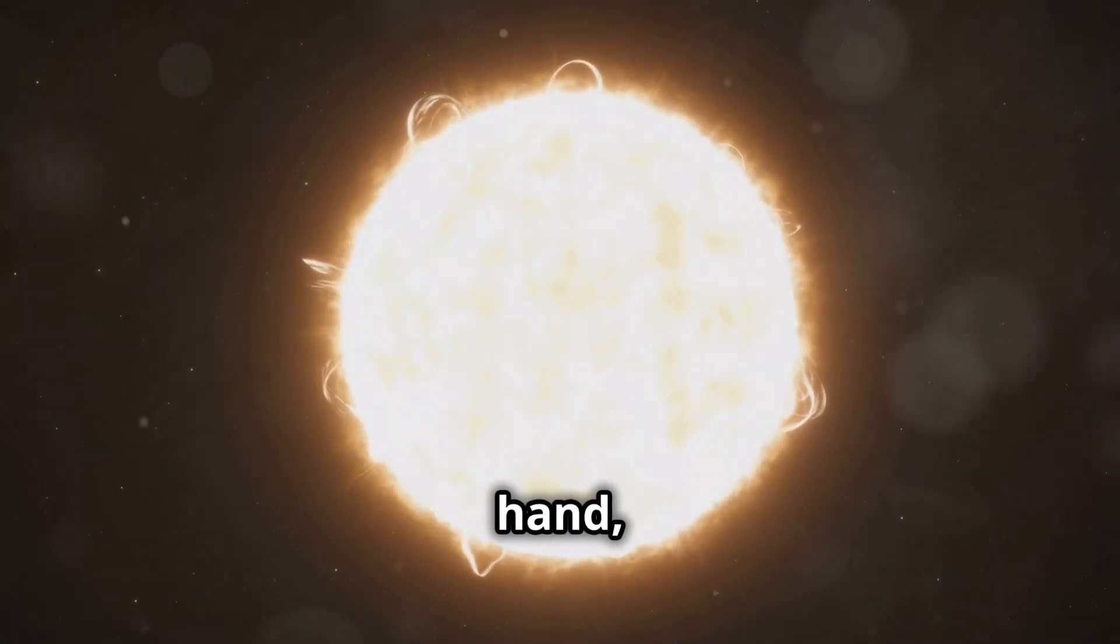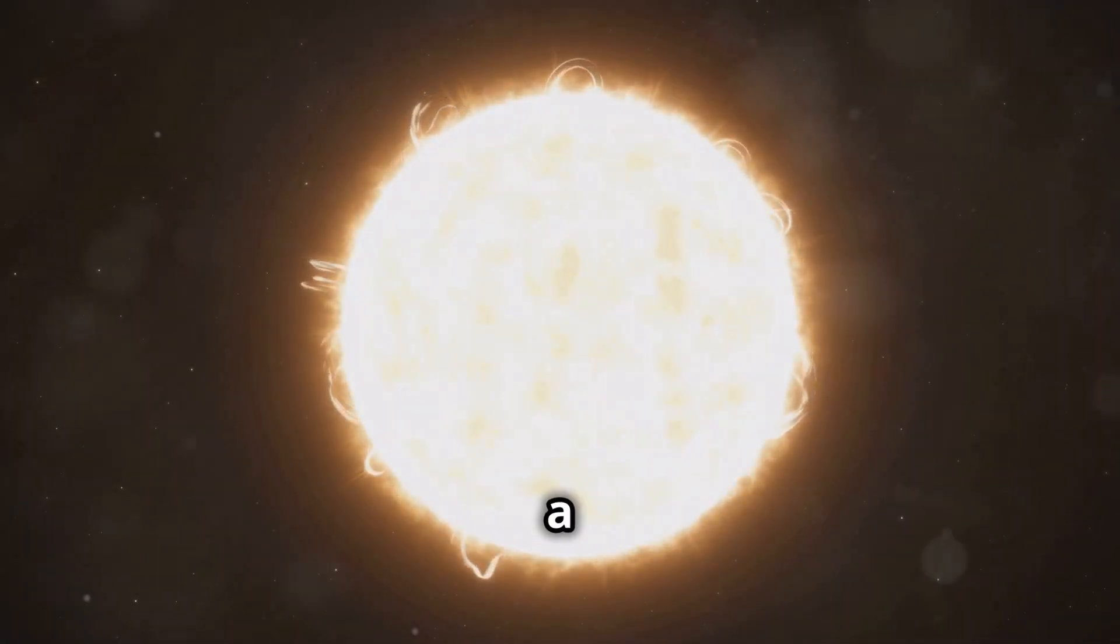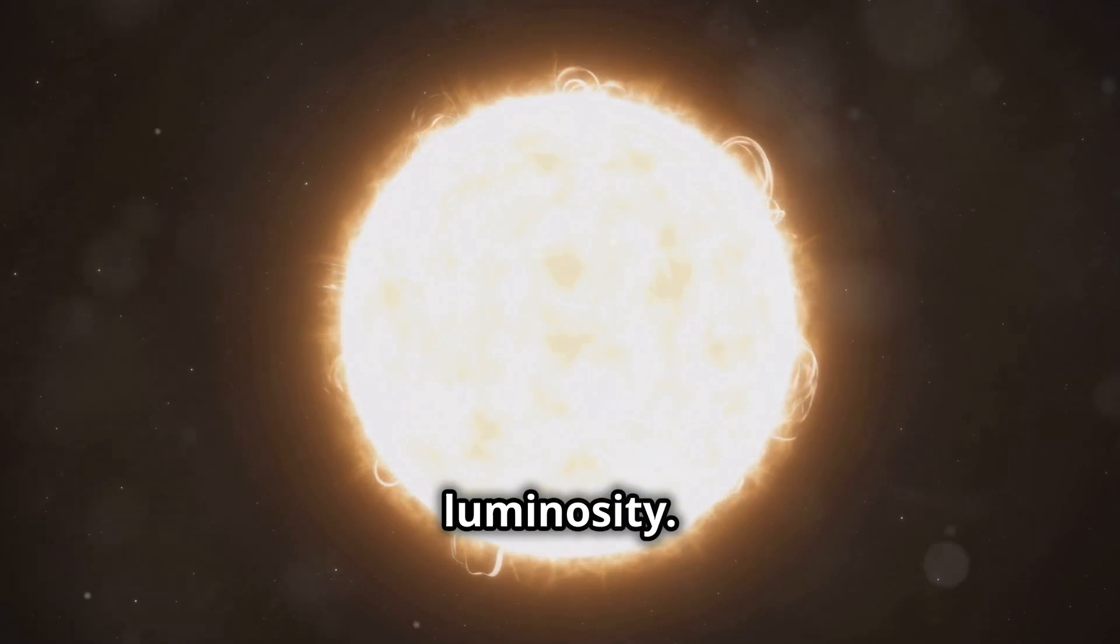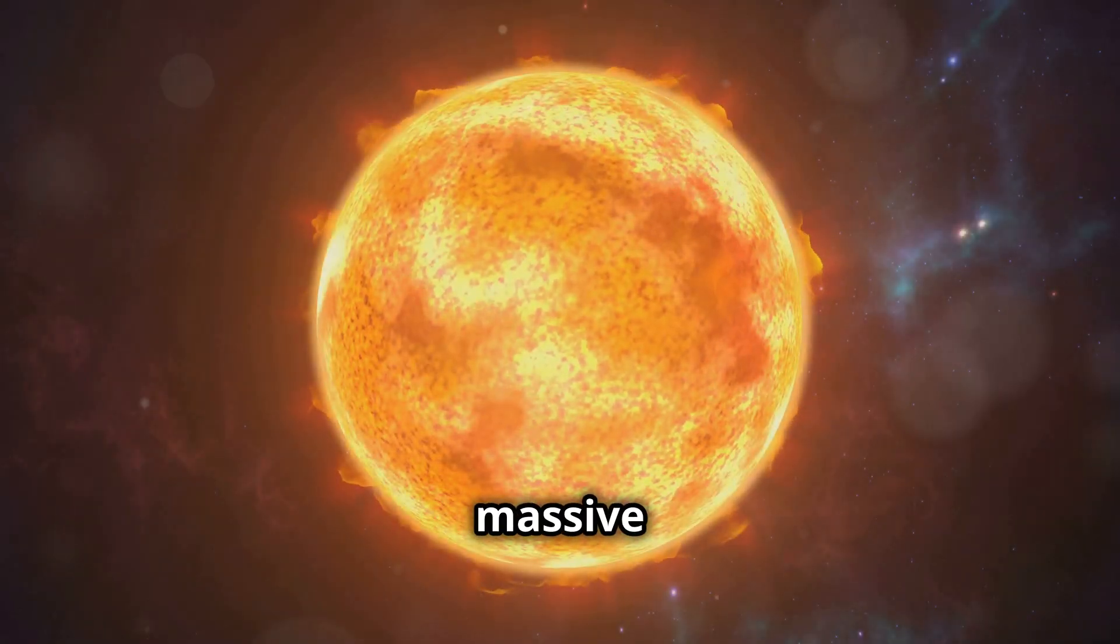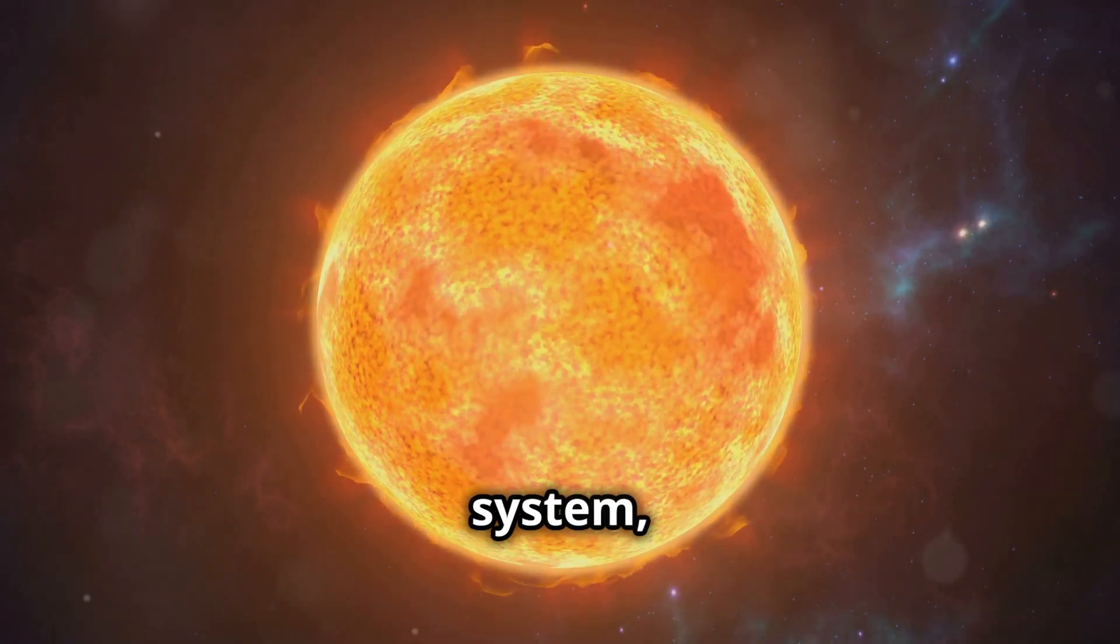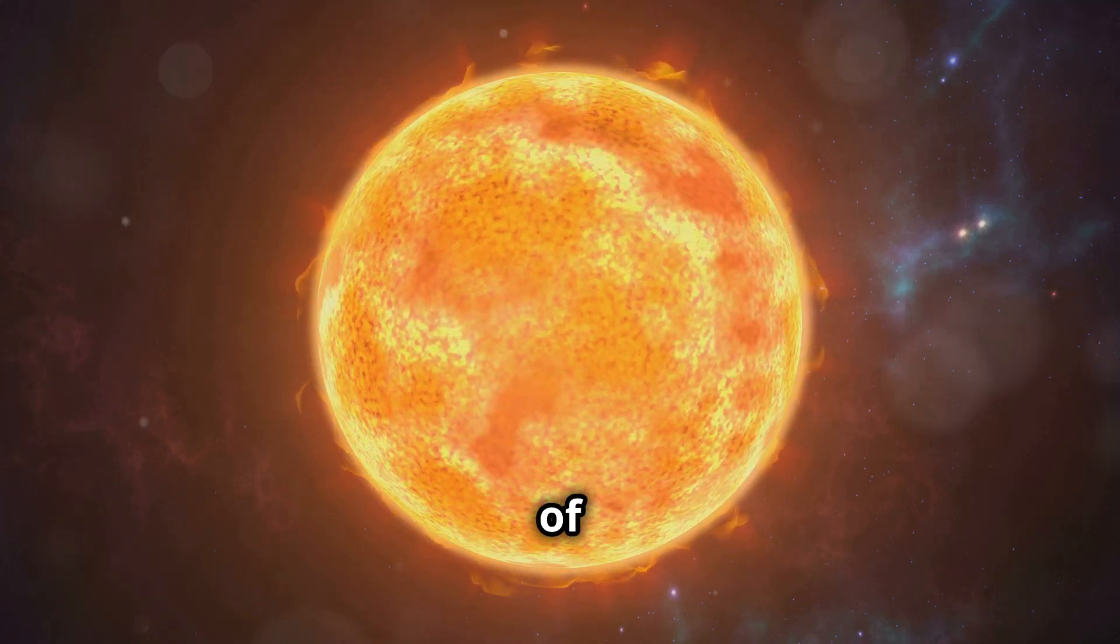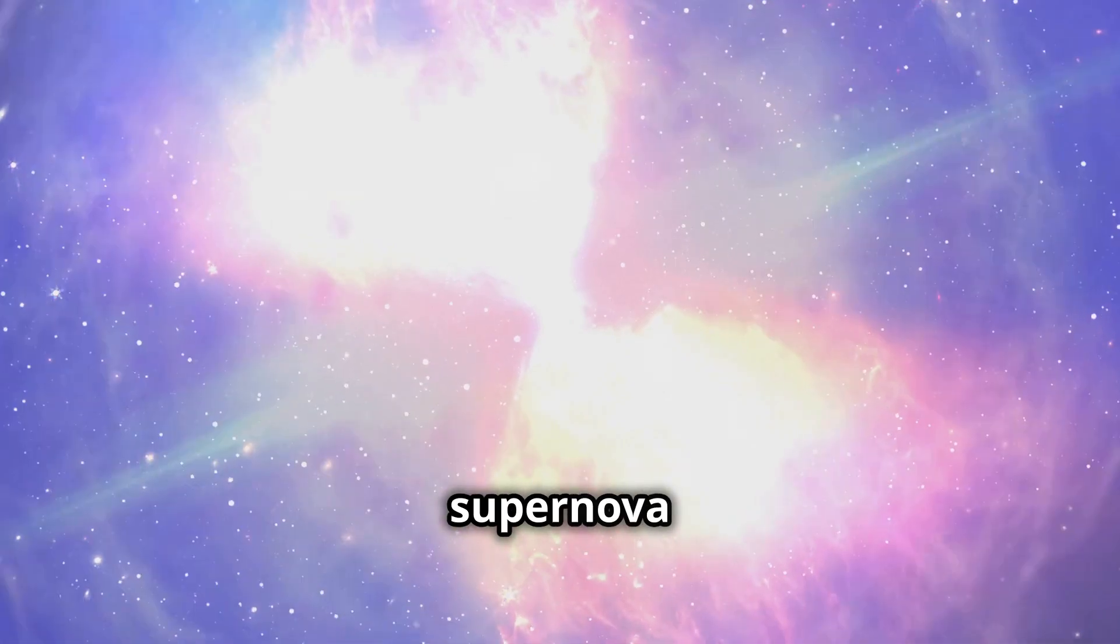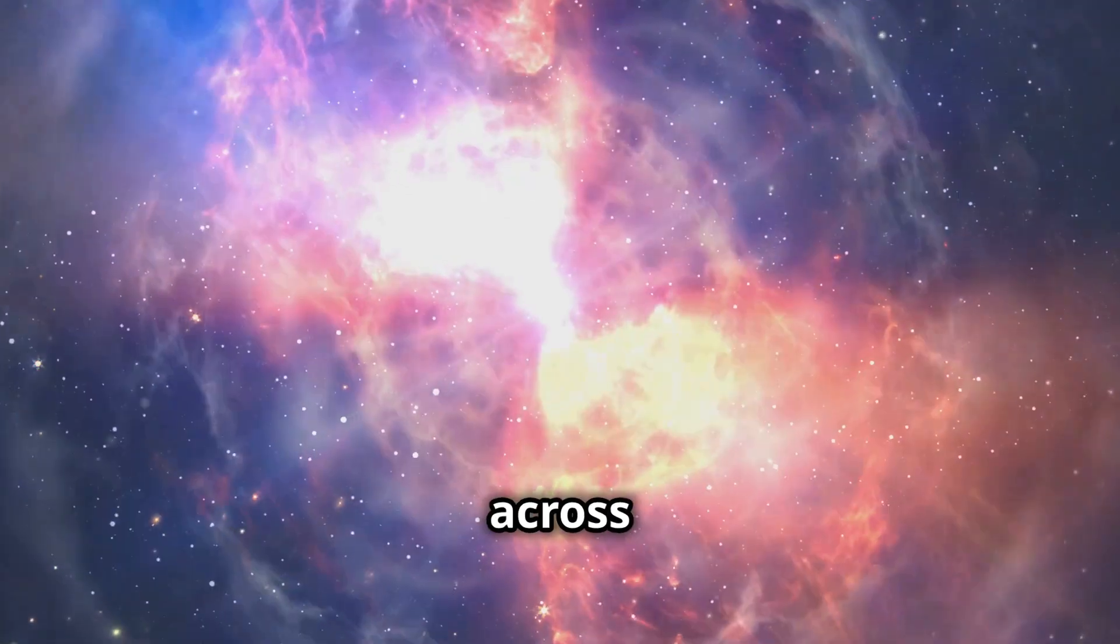Stevenson 2-18, on the other hand, is a hyper-giant star, a colossal celestial body that dwarfs our sun in both size and luminosity. It's so massive that it could swallow our entire solar system, stretching far beyond the orbit of Pluto. While its exact lifespan is unknown, it's likely to end its life in a spectacular supernova explosion, scattering elements across the galaxy.